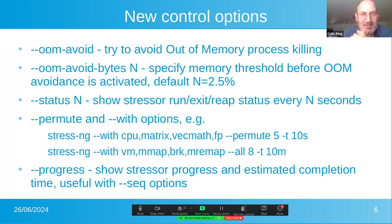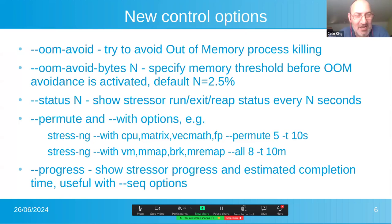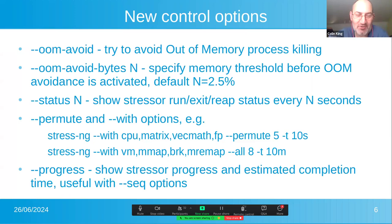People can run hundreds of stressors with StressNG now. There's a status option which will show you how many processes have been run, how many exited, and how many have been successfully reaped. This is useful if you do a long run with 100 or more stressors and want to see if anything locks up or see how things are progressing. The status option — say, status 1 — will every one second show you the current running activity of all the stressors.